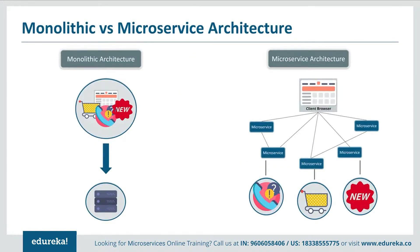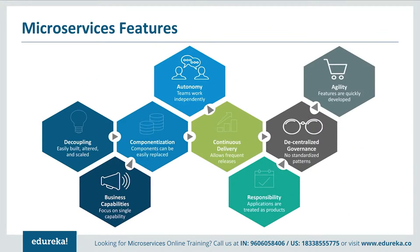In summary, Monolithic architecture had a single framework for all features on a single database, whereas Microservice architecture has different microservices for each feature handling their own database. The features that made developers shift to microservices include: applications were easily built, altered, and scaled; they focused on a single capability; all components could be easily replaced; teams worked independently; frequent software releases were allowed; applications were treated as products; there were no standardized patterns; and all features were quickly developed.